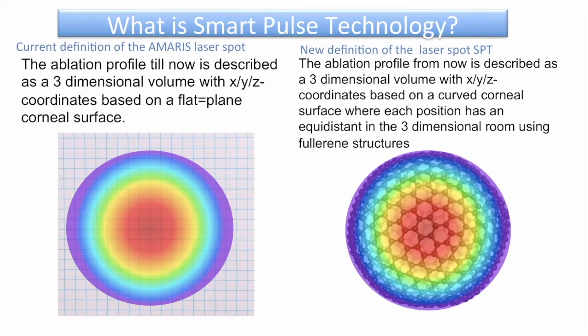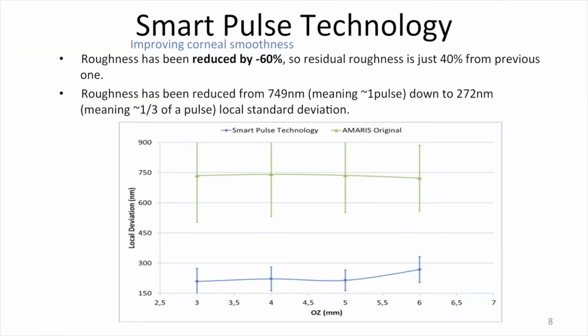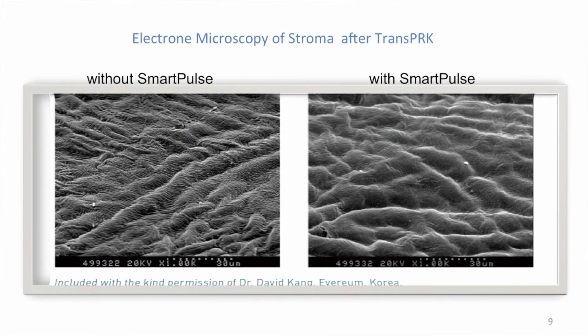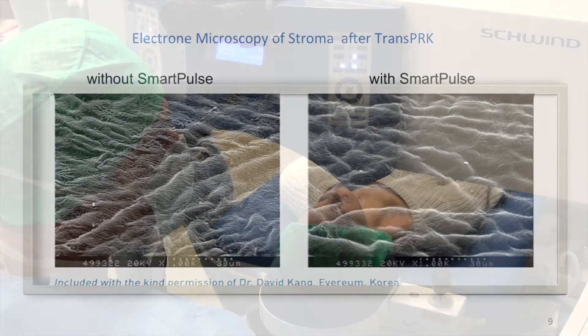The concept of trans-PAK with SPT is what we call smart surface. We see the differences in roughness with and without Smart Pulse Technology. The reduction is about 60%, from 749 nanometers down to 272 nanometers. This roughness can be observed on electron microscopy from Dr. Kahn, showing that the surface of the SPT trans-PAK is smoother.